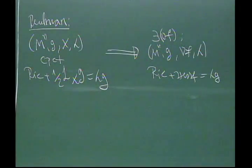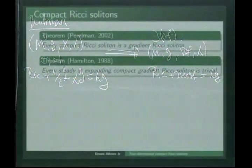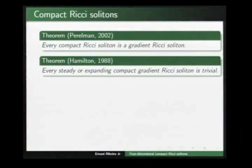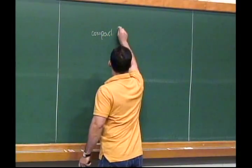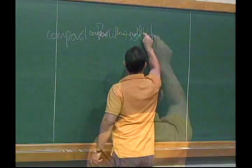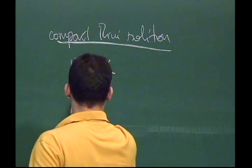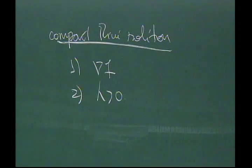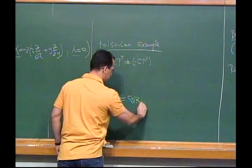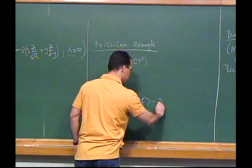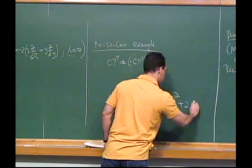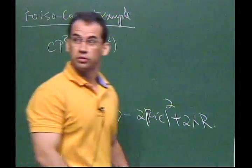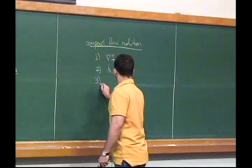Hamilton proved that every steady or expanding compact gradient Ricci soliton is trivial. Combining these two results, we have the following characterization: a compact Ricci soliton must be of gradient type and must be shrinking. Hamilton proved this by using the identity: the Laplacian of the scalar curvature equals ⟨∇R, ∇f⟩ − 2|Ric|² + 2λR. By the strong maximum principle, we conclude the scalar curvature must be of constant sign.